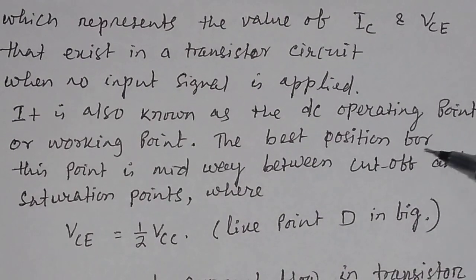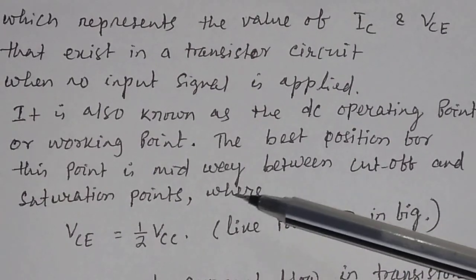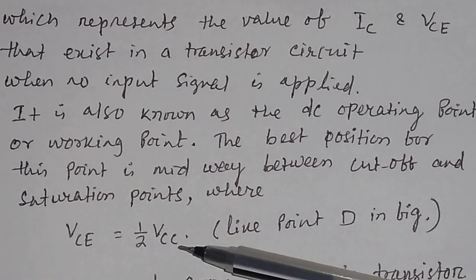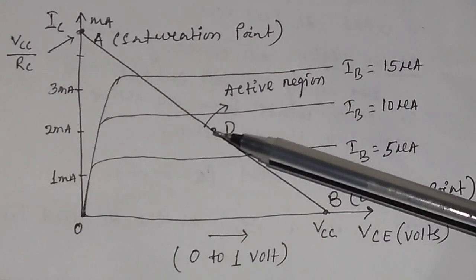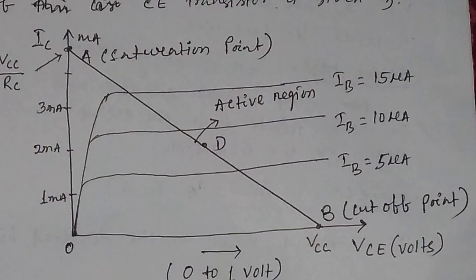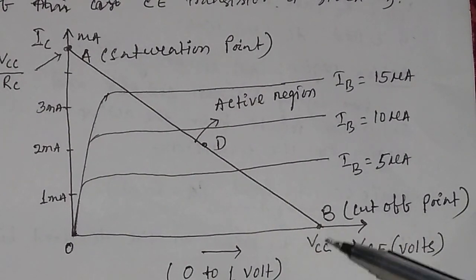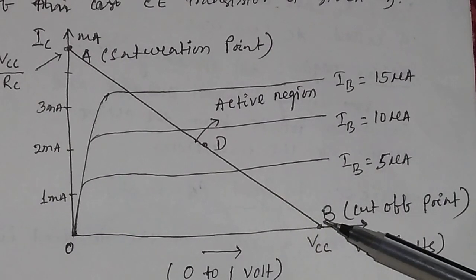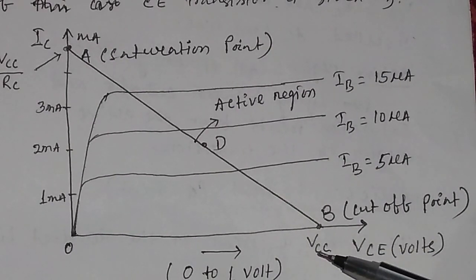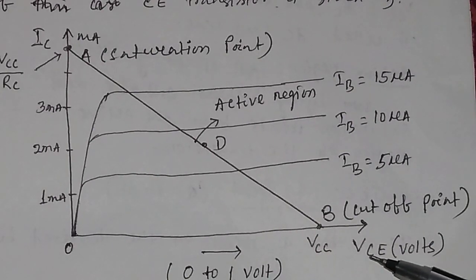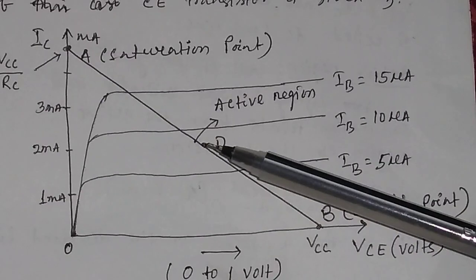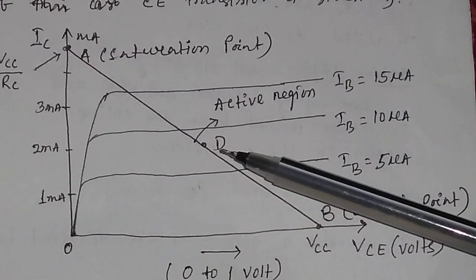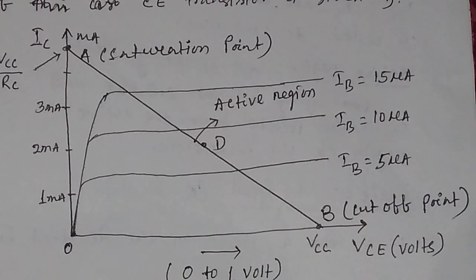What is the best position for the Q point? The best position for the Q point is the midway between the cutoff and saturation points, where VCE is equal to half of VCC — like the point D in the figure. VCC is the voltage supplied by the battery and VCE is the voltage you calculate. If VCE is equal to half of VCC, then that point is your Q point, and here the point D is called the Q point of the transistor.